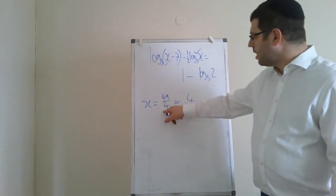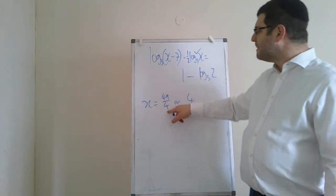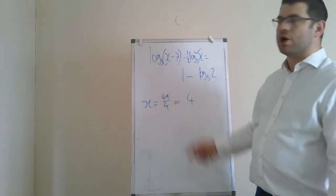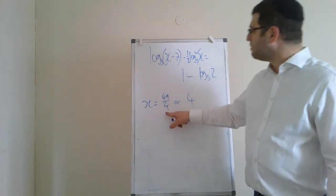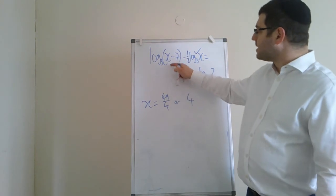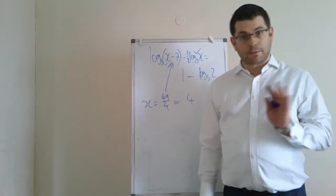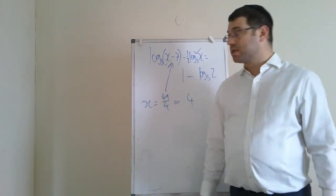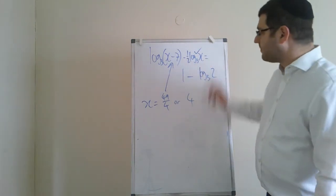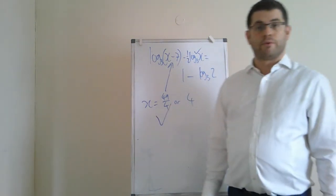But what about this? Well, 49 over 4, if I put that in there, that's bigger than 7. Remember, 28 over 4 is 7, so 49 over 4 is definitely bigger than 7. So if you subtract 7, if that goes in there, that's no problem. That's the inside of the log is positive. We said that's positive. That's 5. So that solution is valid. 49 over 4 is valid.